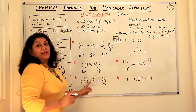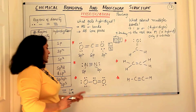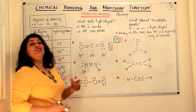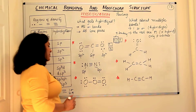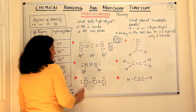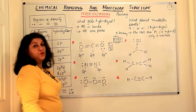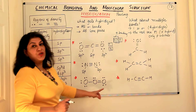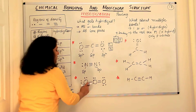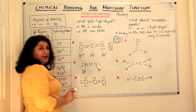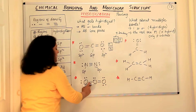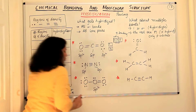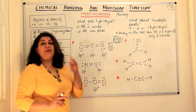Now let us look at ozone (O₃). In ozone, we have three oxygens which are different from each other. The central oxygen has one lone pair and two sigma bonds on its two sides, giving three regions of electron density. Therefore its hybridization is sp2 — one s orbital and two p orbitals give three hybridized orbitals.